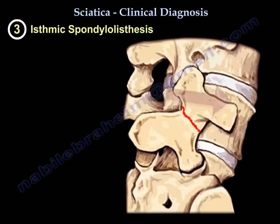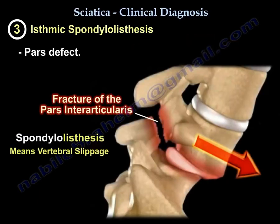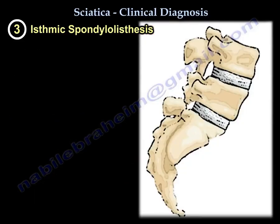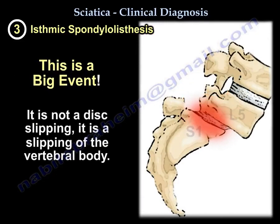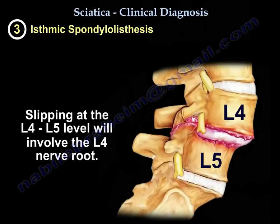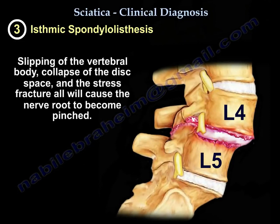Number three is isthmic spondylolisthesis. There is a pars defect, and the word 'thesis' means a slip. So the pars defect allows one vertebral body to slip forward on the other. If the slip is at L5-S1, you will get L5 nerve root involvement. If L4 slips on L5, you will have L4 nerve root involvement. The slipping of the vertebral body, disc space collapse, and stress fracture can cause the nerve to be pinched.